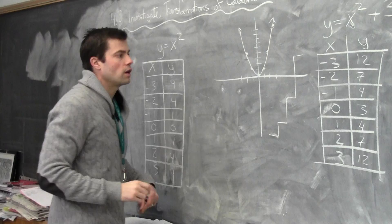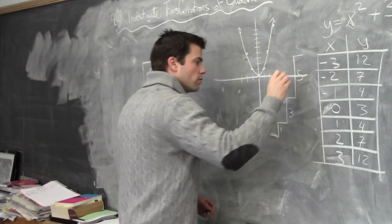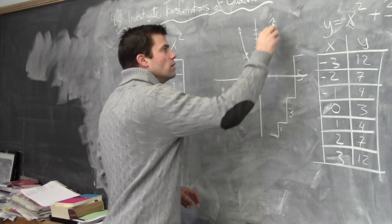This step pattern is a shortcut on how to graph these quadratics. The step pattern is 1, 3, 5. It always goes in this order, and we can make changes accordingly depending on the equation, but the standard one you need to remember is 1, 3, 5.